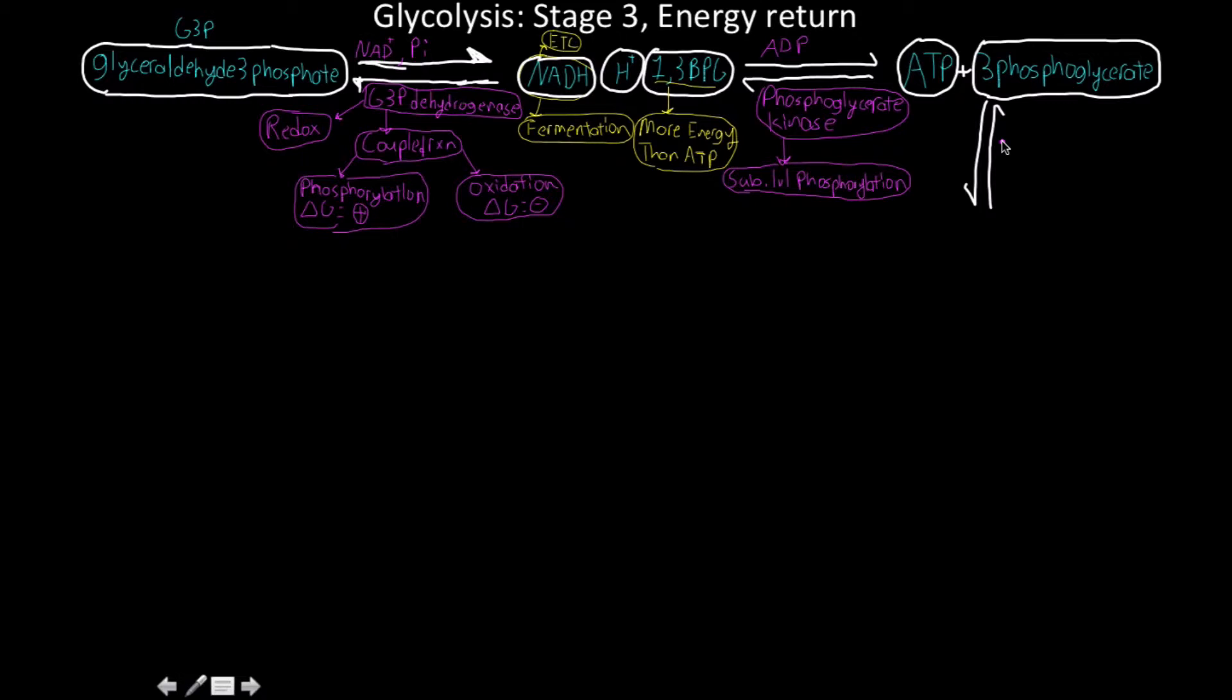3-phosphoglycerate is going to react with phosphoglycerate mutase. Mutases are enzymes that basically just do an intramolecular functional group shift. In this context, we're going to be moving the phosphate group around. We get 2-phosphoglycerate. We're taking a phosphate from the third carbon and moving it to the second carbon. No ATP is used.